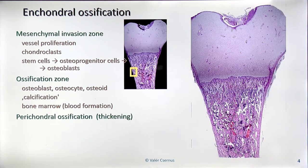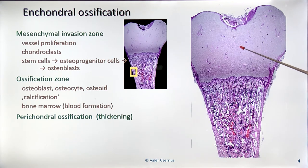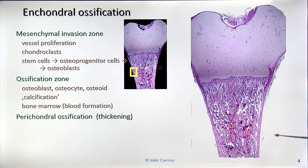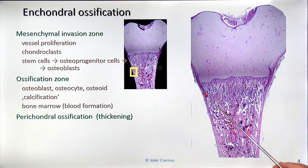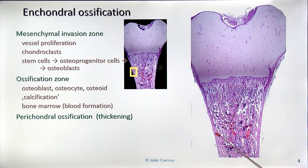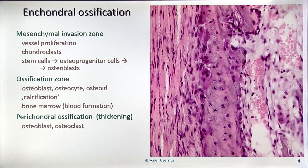This is the story of enchondral ossification — how the cartilage turns to bone from inside. The bone must thicken because our bone is much thicker than that of the embryo. Since we have no cartilage cells here, thickening comes through endosmal ossification from the periosteum — originally perichondrium and later periosteum.